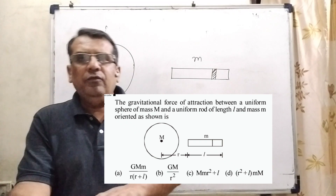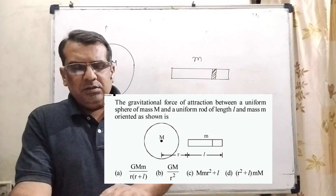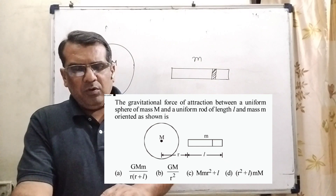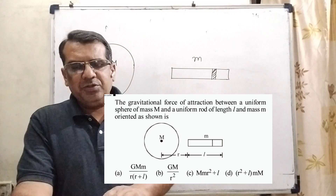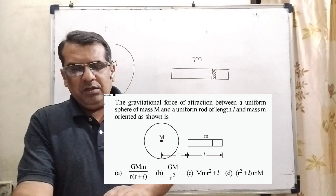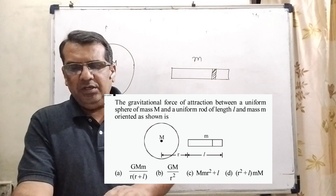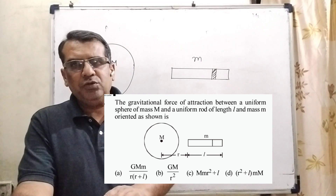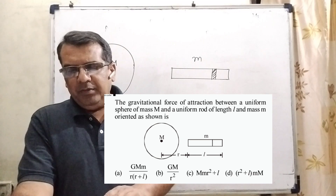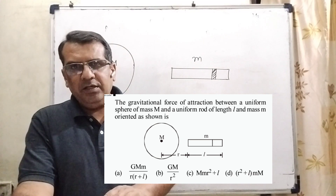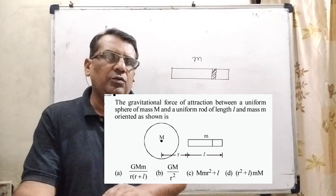We have four options. Option A: GMm / [r(r+l)]. Option B: GM / r². Option C: Mm(r² + l). Option D: (r² + l) · mM.